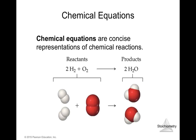Here we have two moles of hydrogen — one mole of hydrogen shows the two atoms of hydrogen forming the molecule H2 — as well as one mole of oxygen. This produces two moles, or two particles, of water: H2O, two hydrogen and one oxygen.